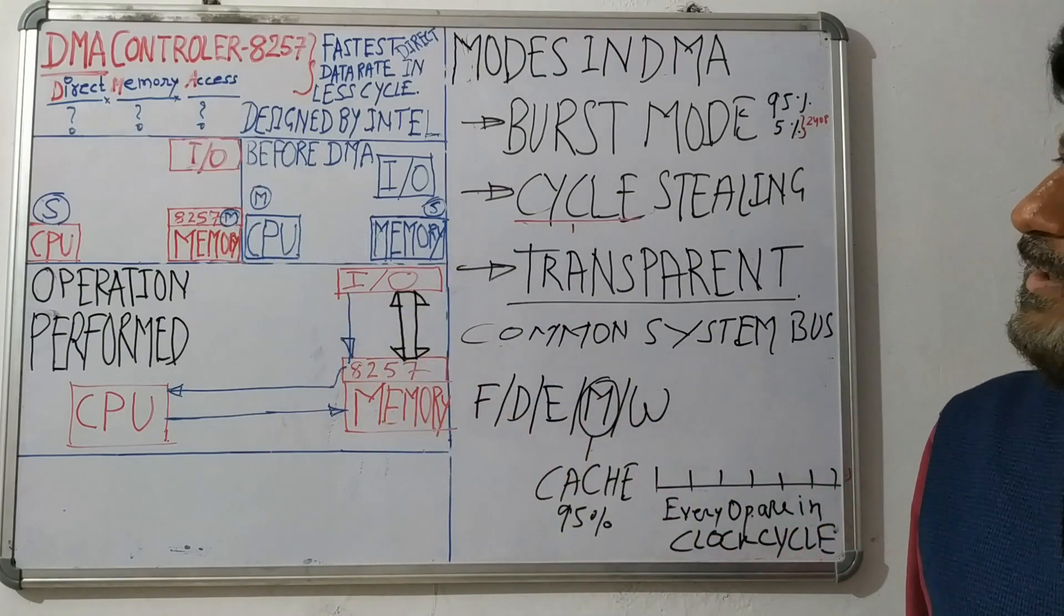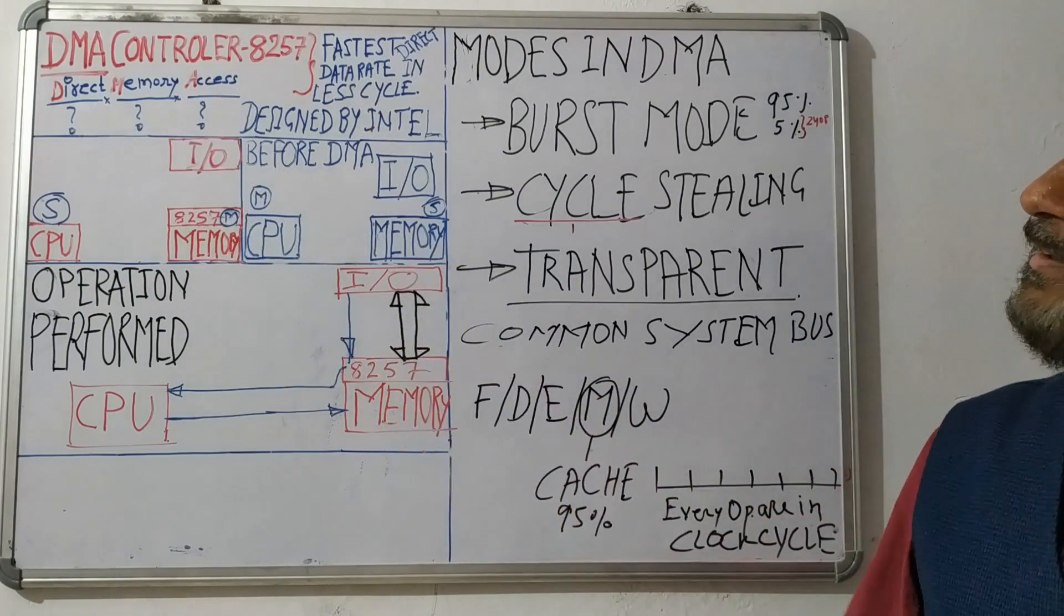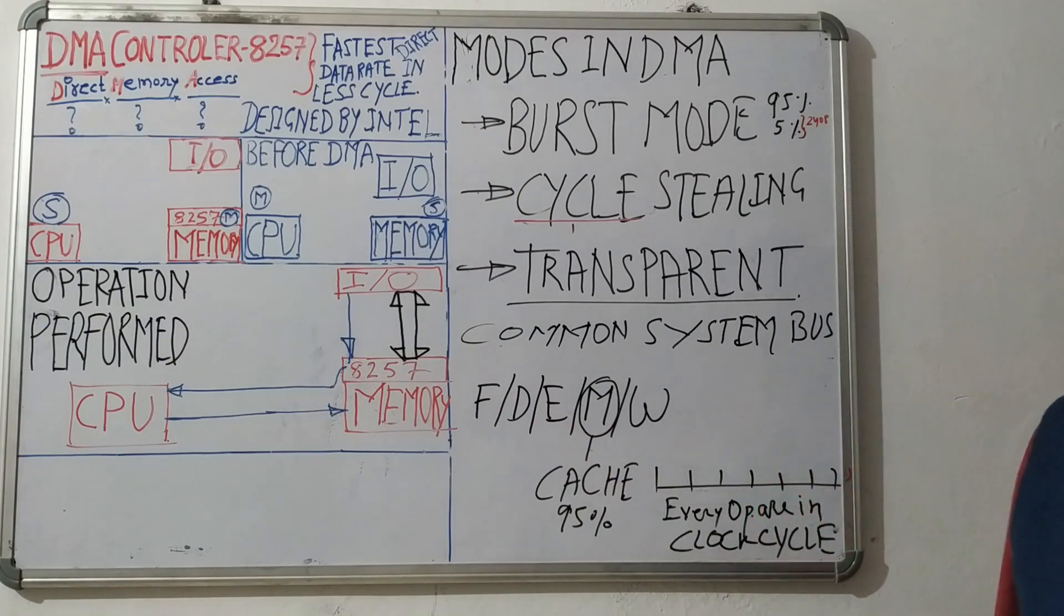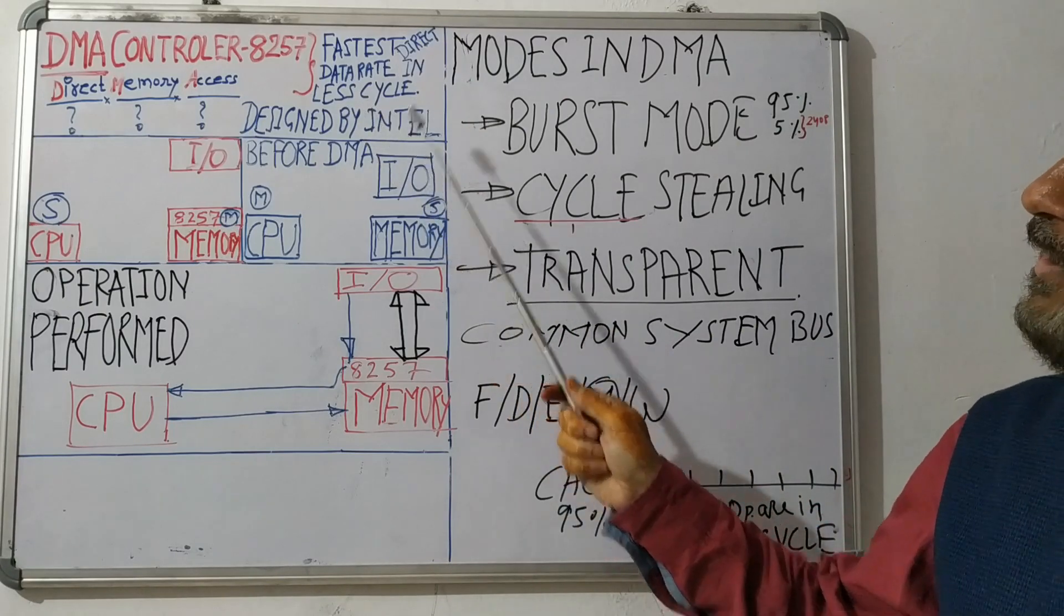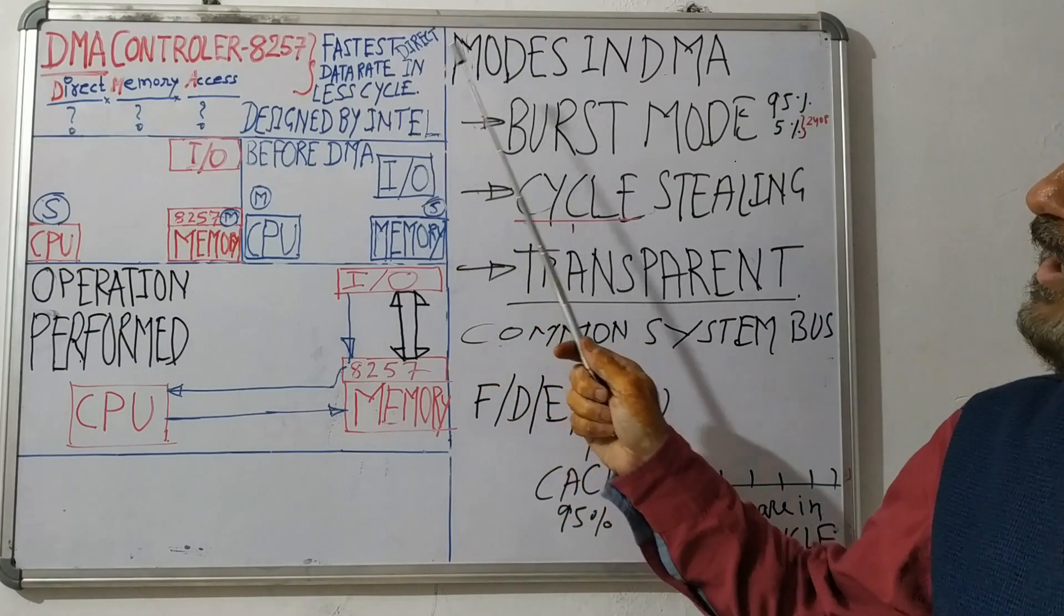So what is the Direct Memory Access? It is basically a controller 8257. It is used for fastest data rate in less cycle and that too is directly from IO to memory.